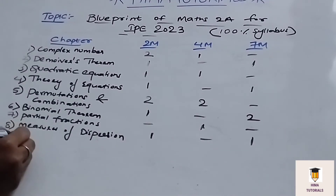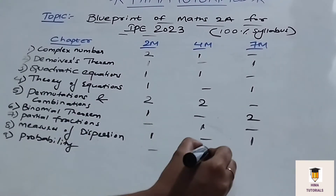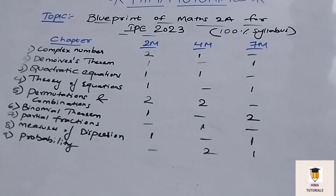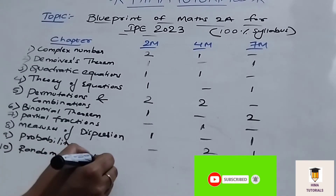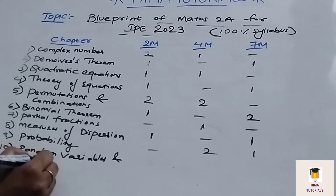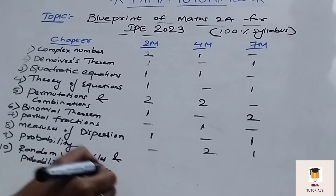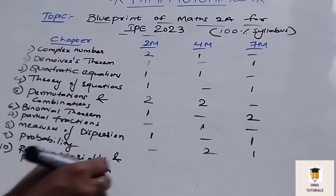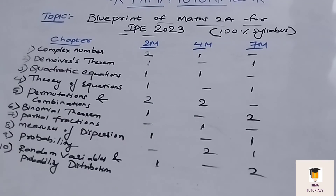Coming to the next chapter, Probability. In Probability, we will get 2 four-mark and 1 seven-mark question. And coming to the final chapter, Random Variables and Probability Distribution — we will get 1 two-mark and 2 seven-mark questions. This is the blueprint for Maths 2A. I hope it is clear — please make a note of it.